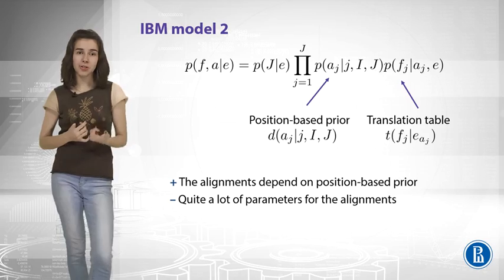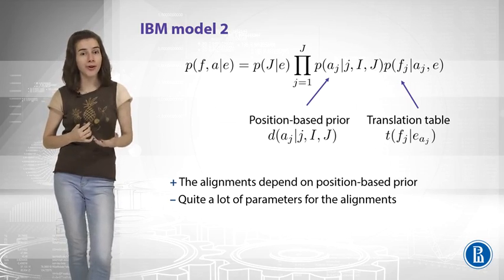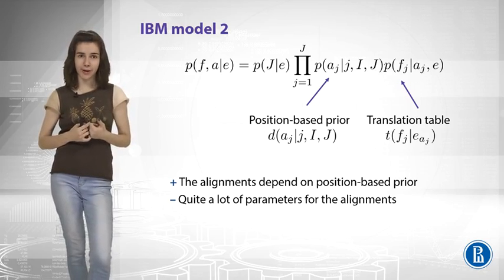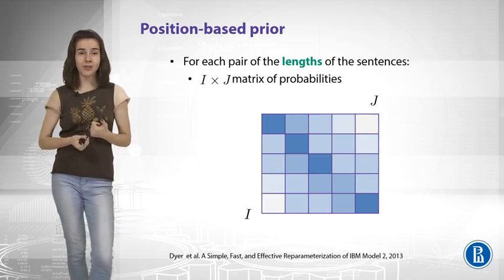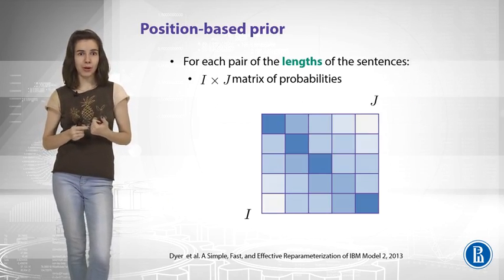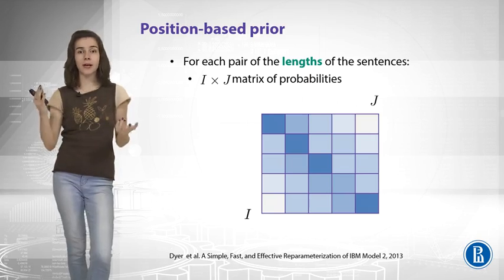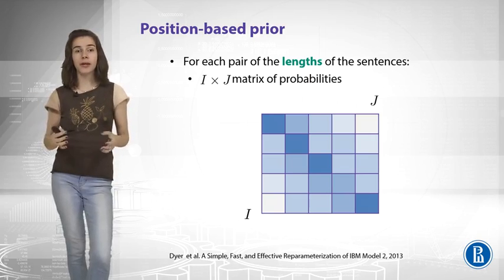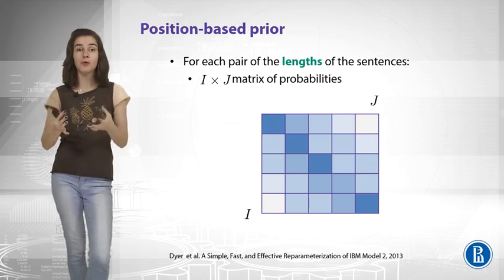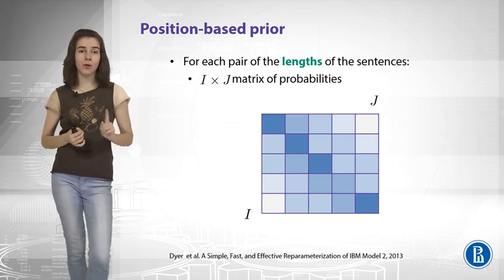Now, how many parameters do we have to learn to build this position-based prior? Well, actually a lot of parameters. So you have I multiplied by J, which will be the size of the matrix of probabilities. And it is not all.